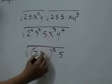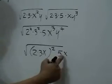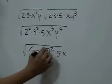For x cubed, we have x squared here times x and for y to the fourth, we have y squared.